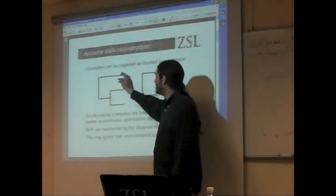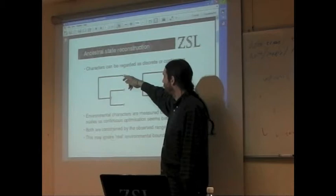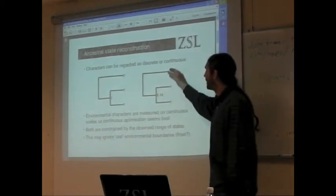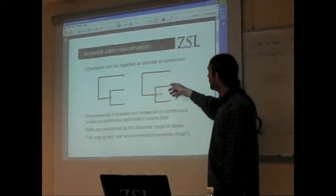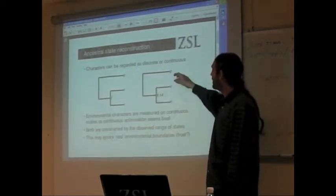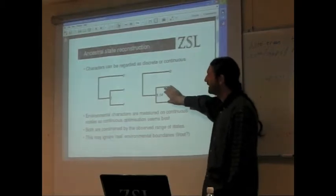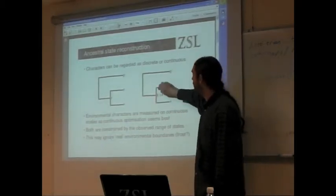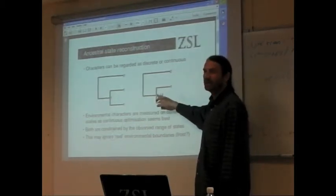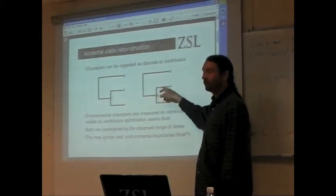If we treated these numbers at our terminal nodes as discrete characters, we'd have two, one, one, and our ancestral state here would be one. If we treat these as continuous characters, we can use a Brownian motion model of character state change that slides along, so that we reconstruct not the same values, but some intermediate value, based on a minimization of change along the branches.